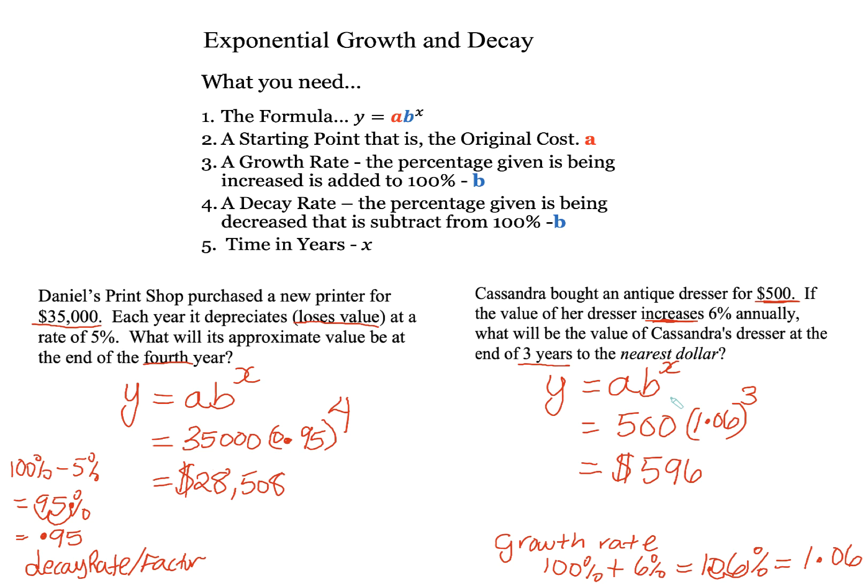Step one, you need to write the formula. So you need to memorize the formula. You also have to know who is the starting point. That's the original cost. And you need two important things. You need to identify whether it's a growth rate by looking at the keywords in the problem. And if it's a growth rate, take that percent that's in the problem and add 100% to it. If it's a decay from reading the problem, then you're going to subtract from 100% the given percent that's in the problem. And the final thing is the time. And here we set up and we solved. I hope this lesson has been helpful. Good luck on your task examining.